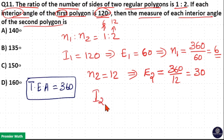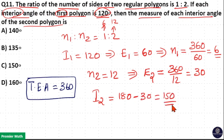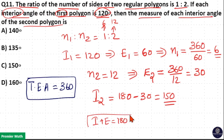The interior angle of the second polygon is 180 minus the exterior angle 30, which is equal to 150 degrees. Because interior angle plus exterior angle equals 180. So the answer is option C, 150 degrees.